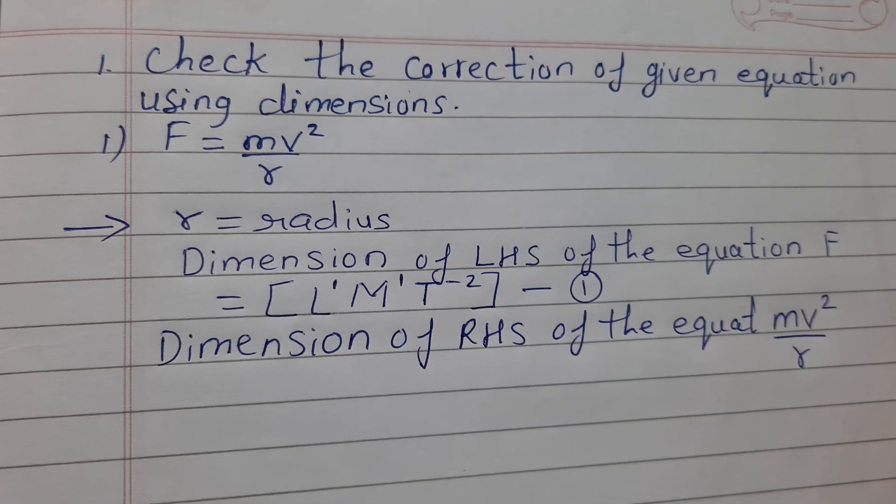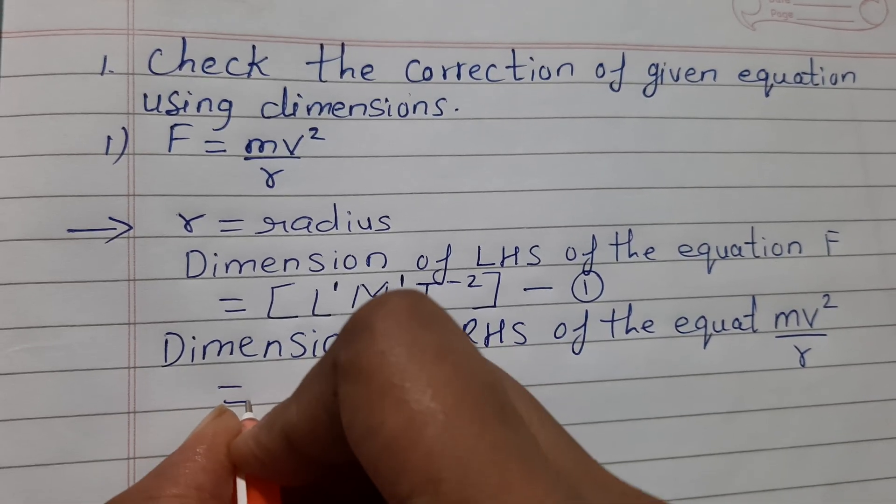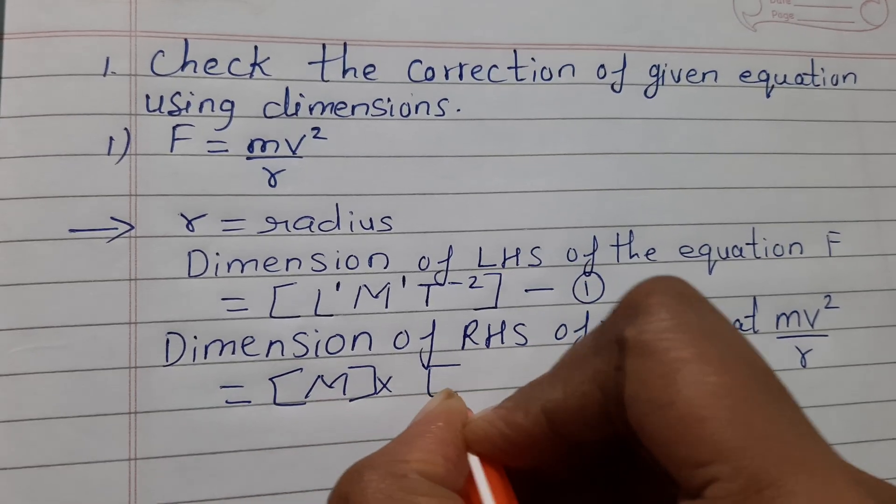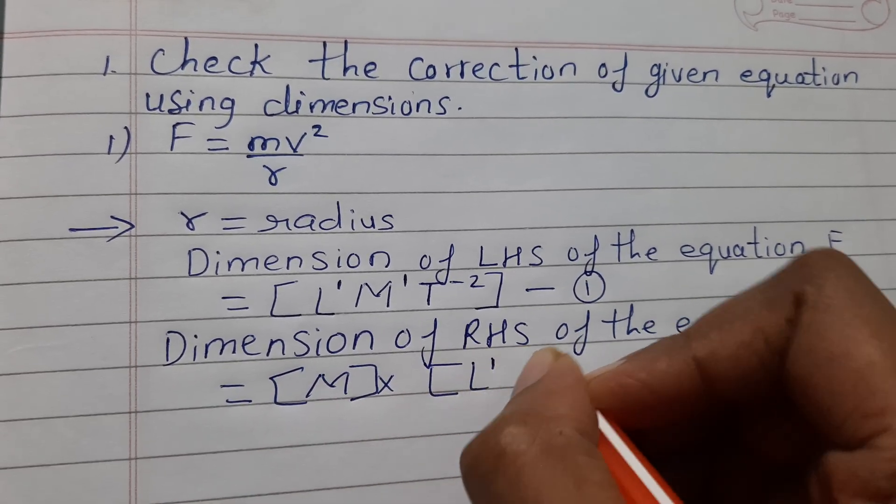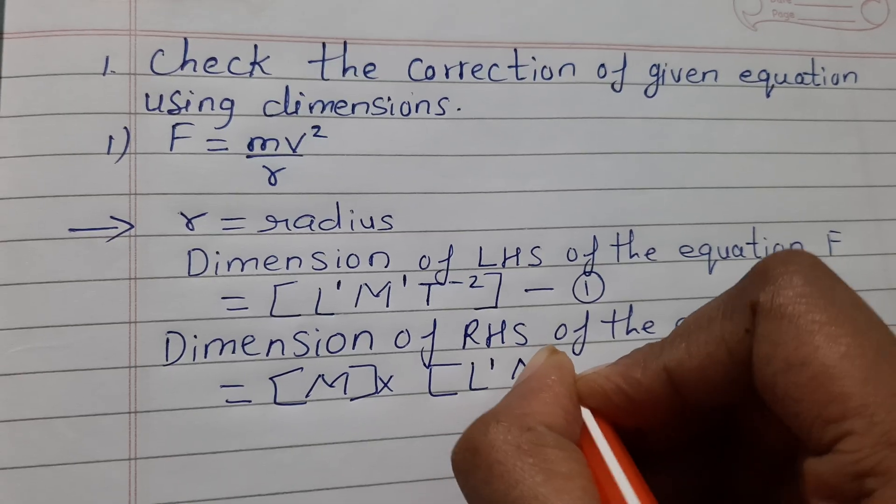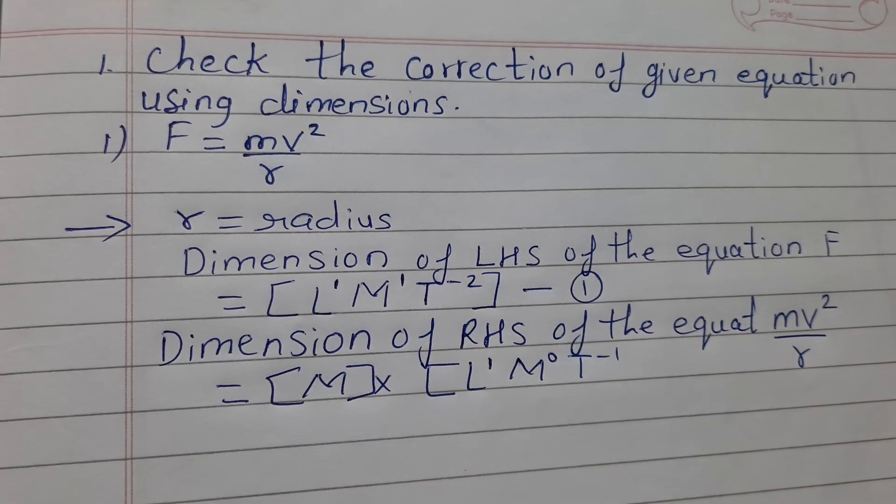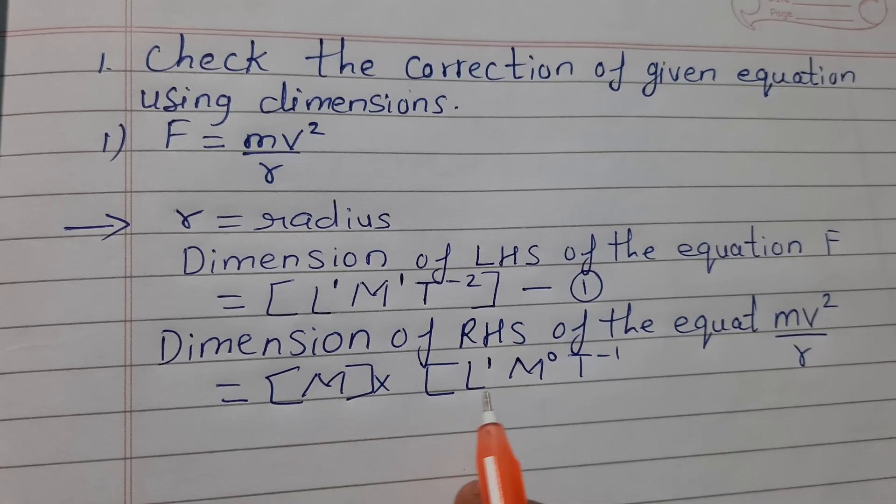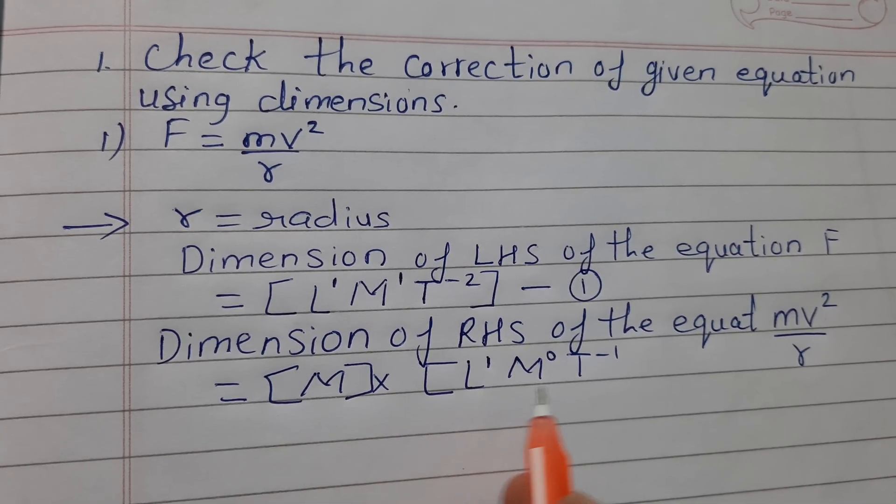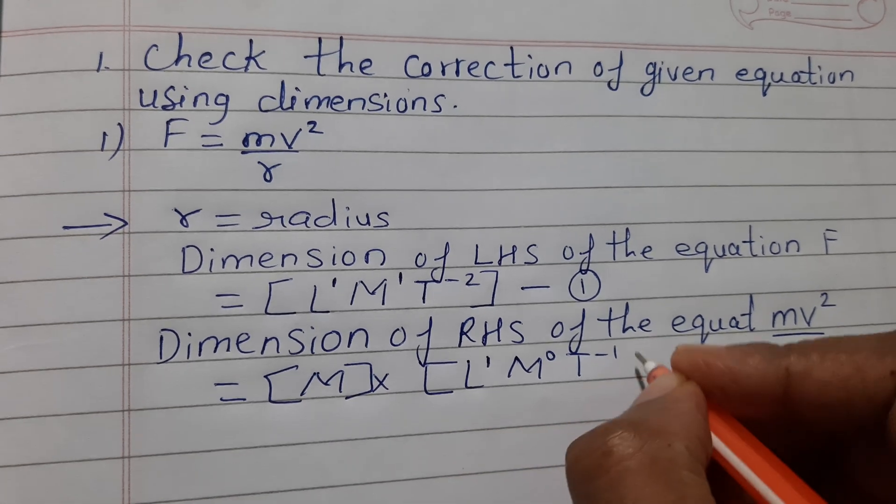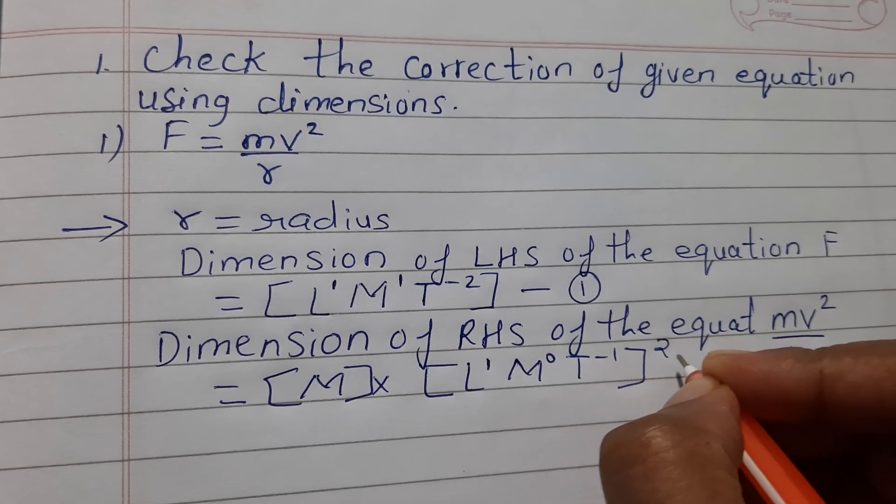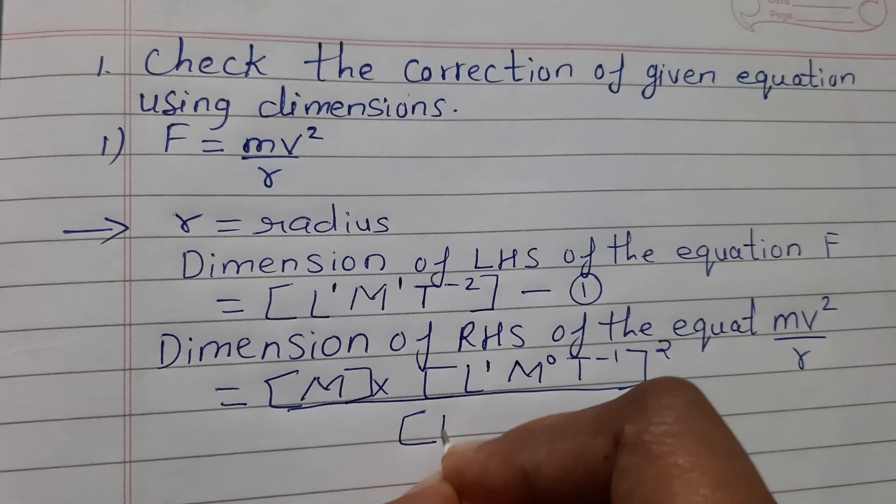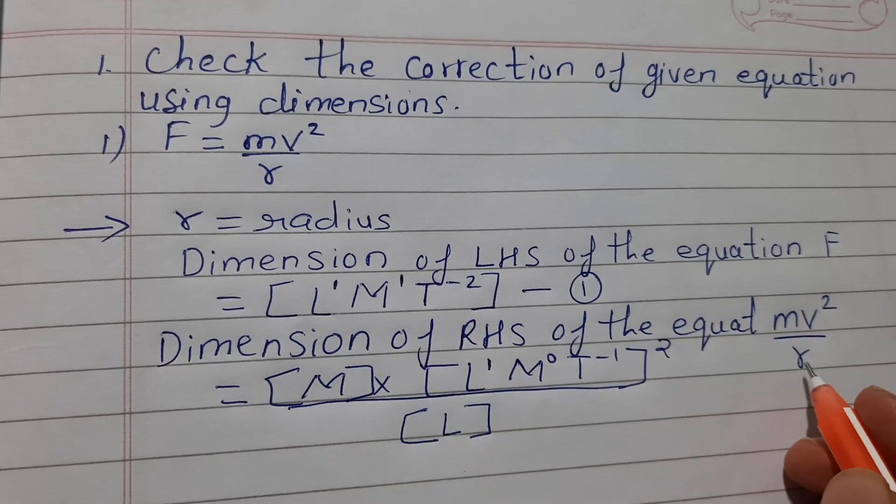mv²/r = m × [L¹M⁰T⁻¹], and here it will be t minus 1. Dimension here: mass, this is dimension of length mass and time minus 1, and then square it, upon dimension of l.